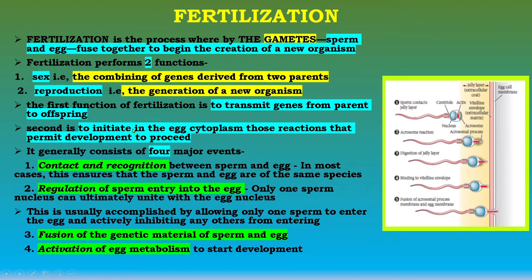The second function is to initiate in the egg cytoplasm those reactions that permit development to proceed. The fertilization process consists of four major events: first is contact and recognition between sperm and egg; second is regulation of sperm entry into the egg, ensuring only one sperm nucleus unites with the egg nucleus; third is fusion of the genetic material of sperm and egg; and fourth is activation of egg metabolism to start development.